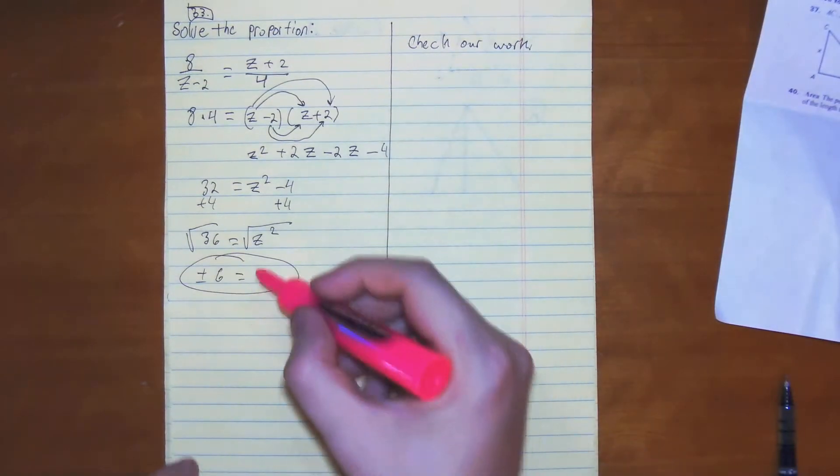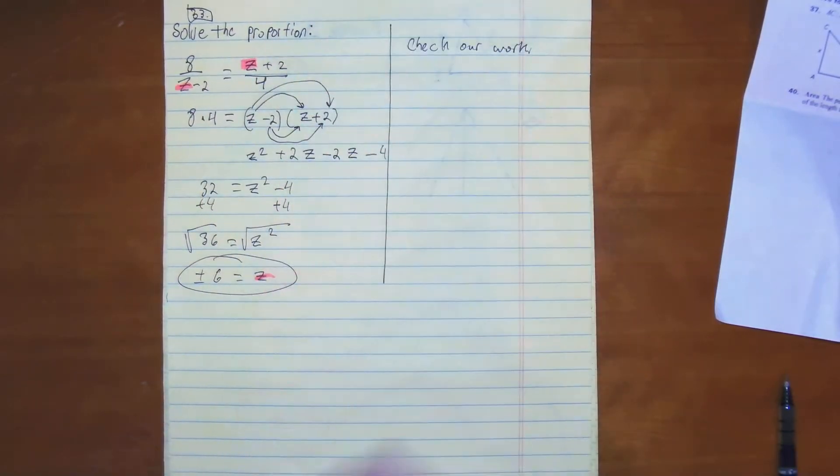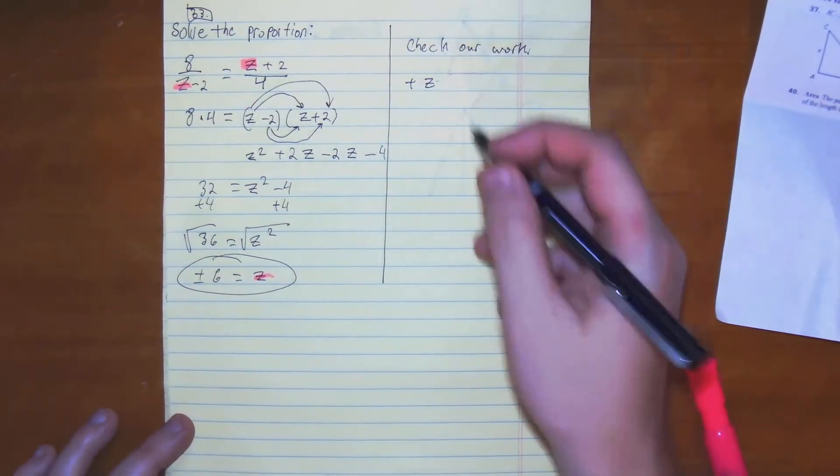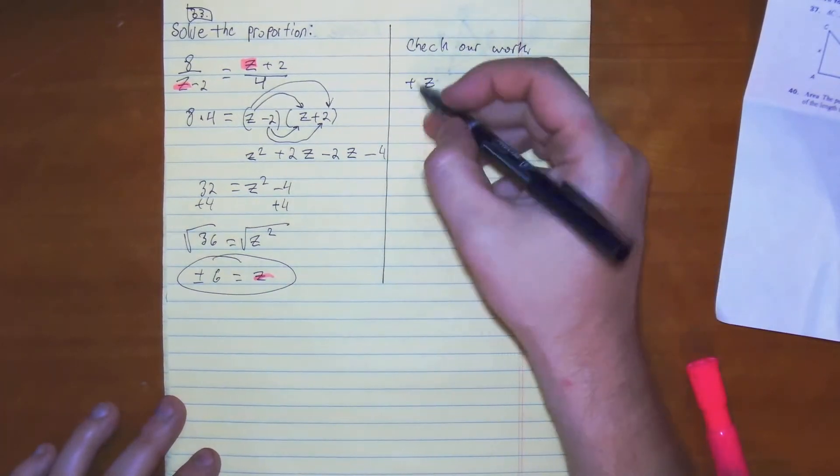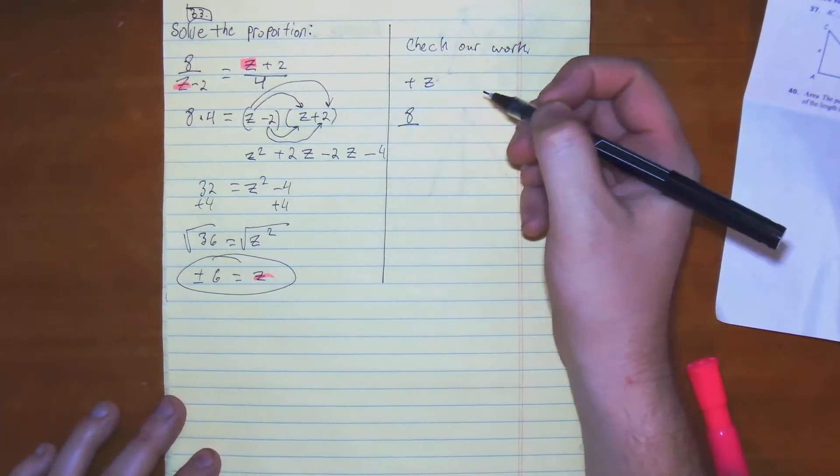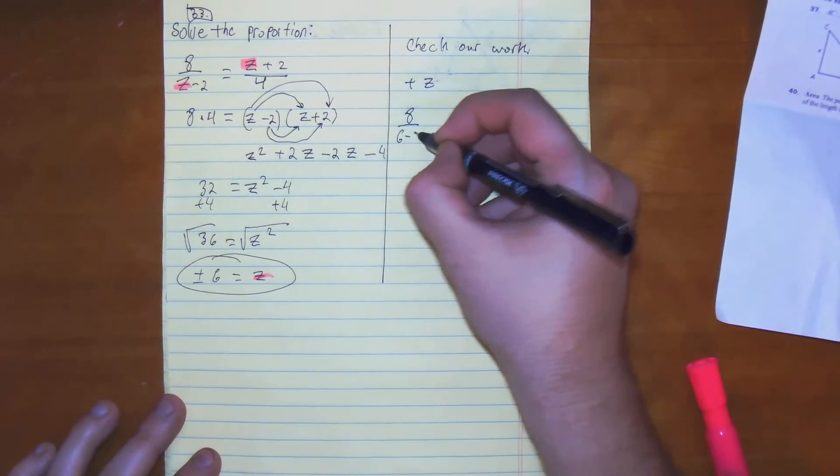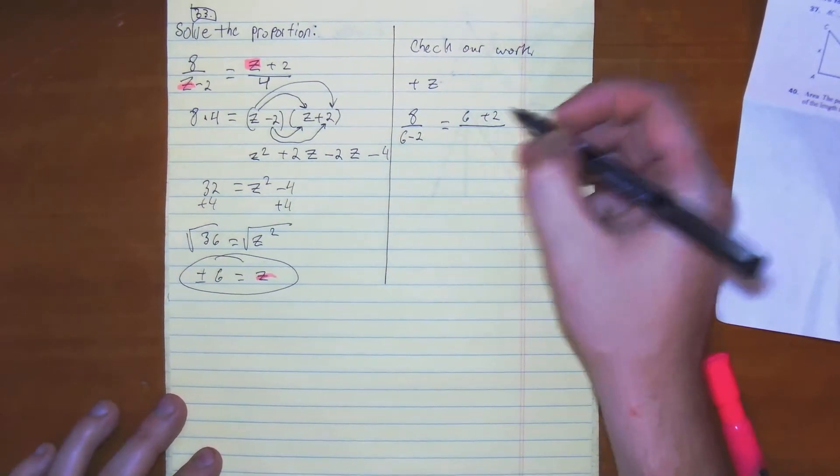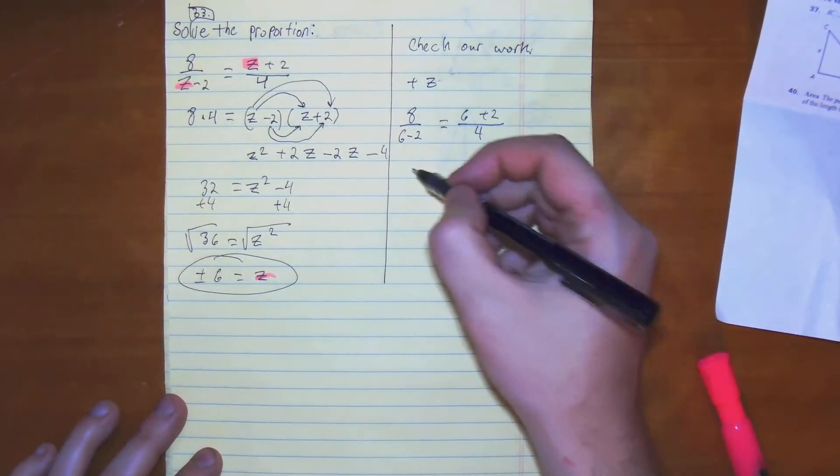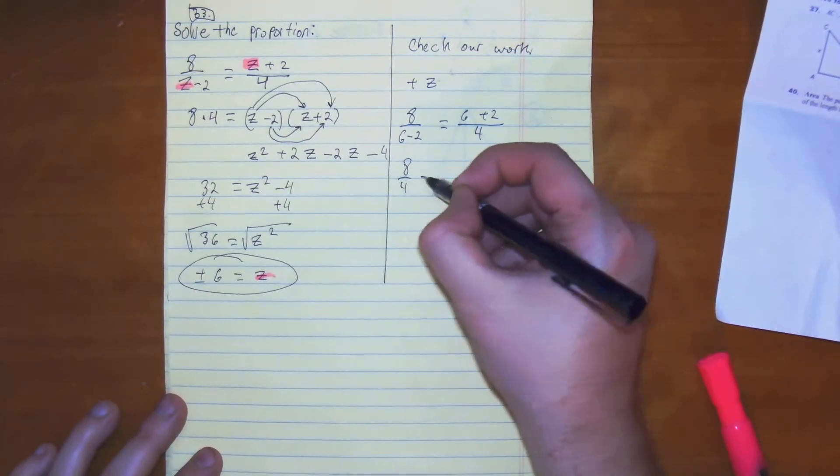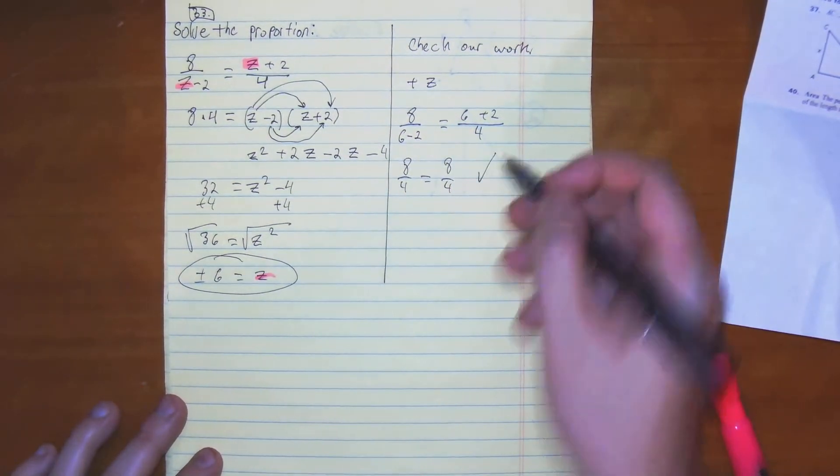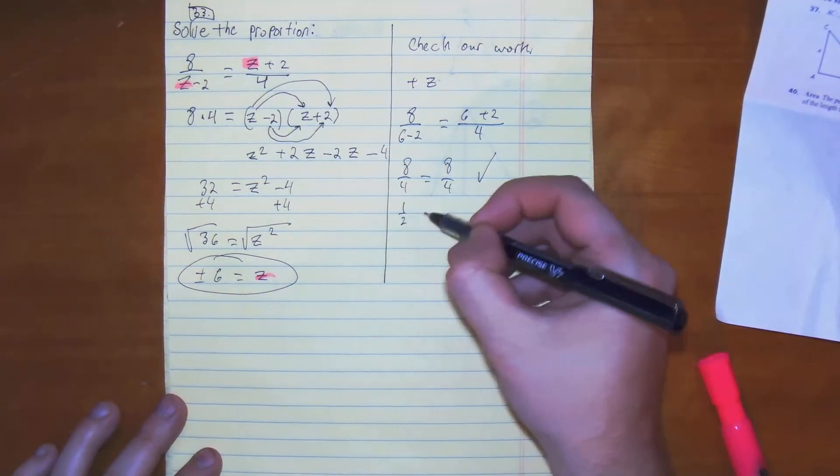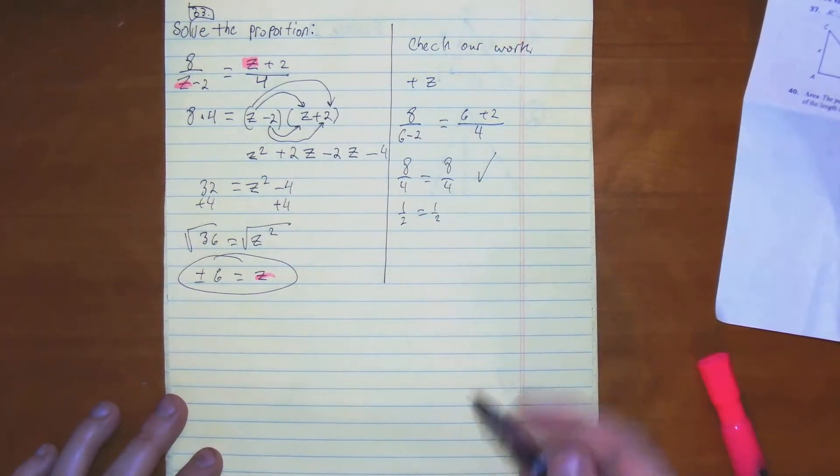Okay, so we got z right here. We have z here and z here. So let's try the positive z first. We're at 8 over 6 minus 2 equals 6 plus 2 over 4. So what we have is 8 over 4 equals 8 over 4, which works. Because 4 goes into it, 1 half equals 1 half.